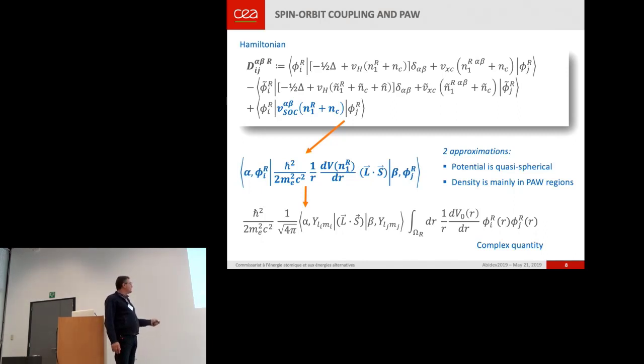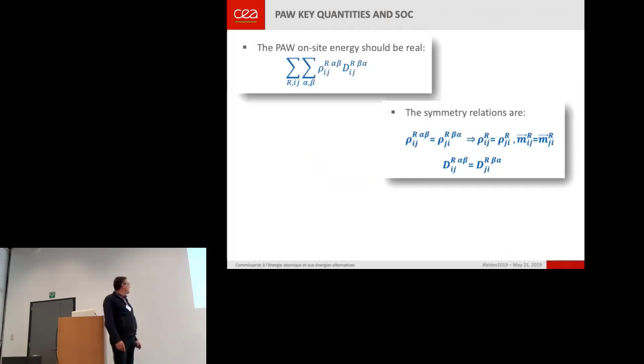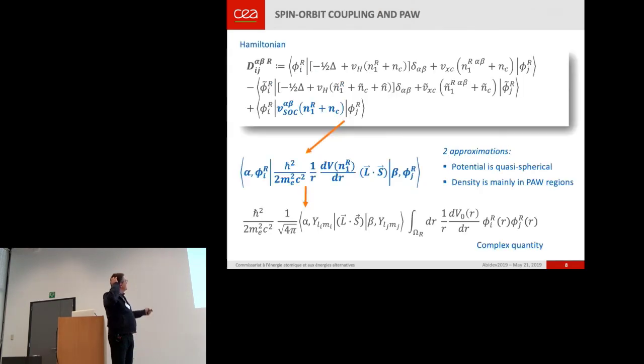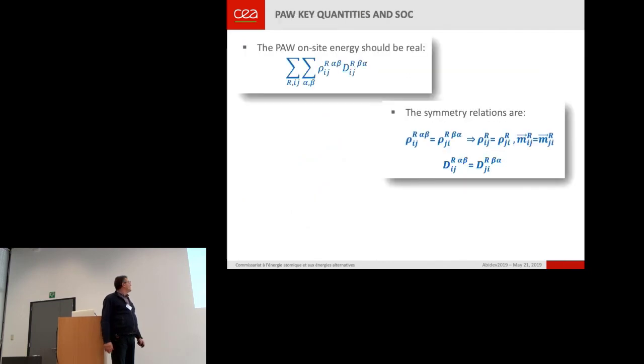You make the assumption that the potential is quasi-spherical and that the density is mainly in the PAW region. And if you do this assumption, you obtain an angular part and a radial part that you can compute in a not so complicated way. Note, and this is the important point, that this quantity is complex and no more real.